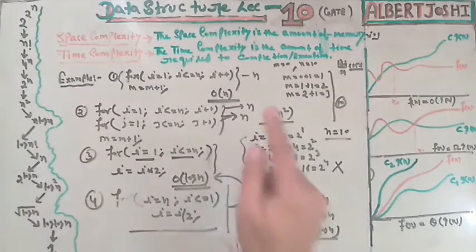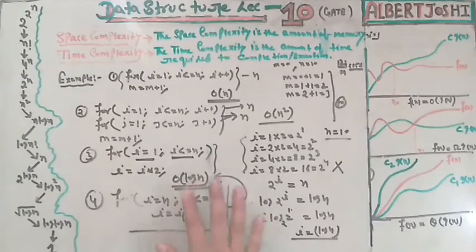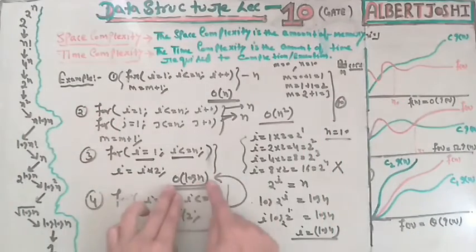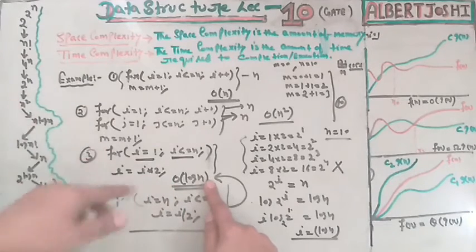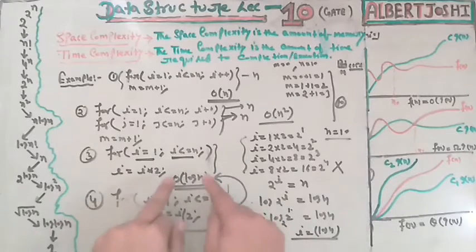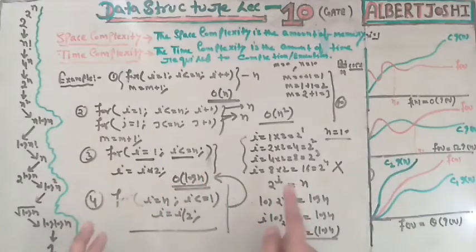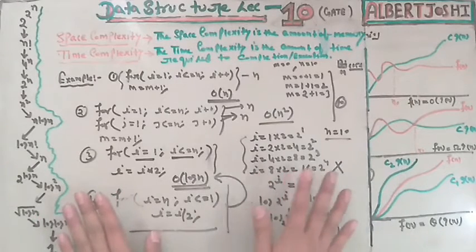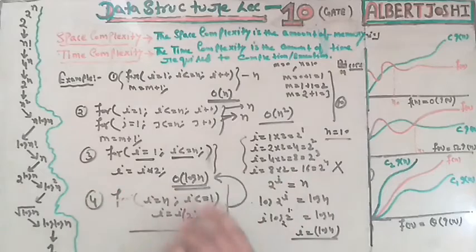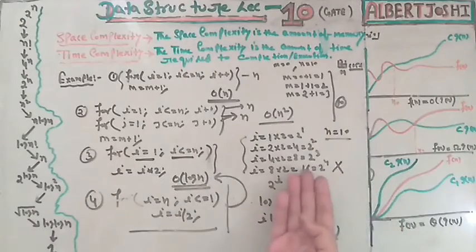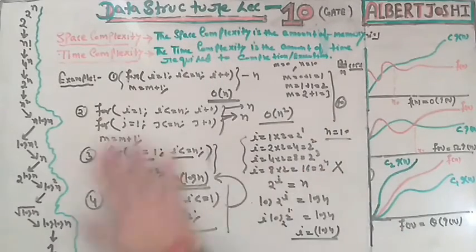The software tester uses mathematical modeling to check whatever algorithm you have written and what time it is taking, and also checks if there is another algorithm that takes less time. This is the task for the software tester. We use mathematics in data structures. Now we will discuss upper bounded and lower bounded functions.